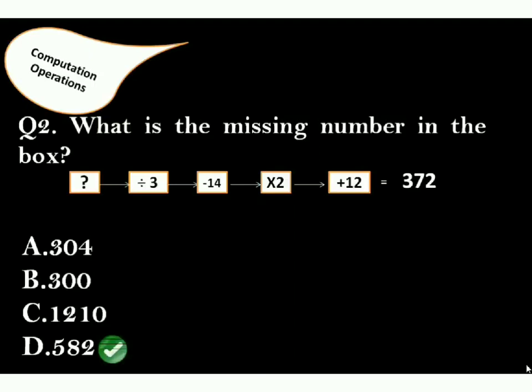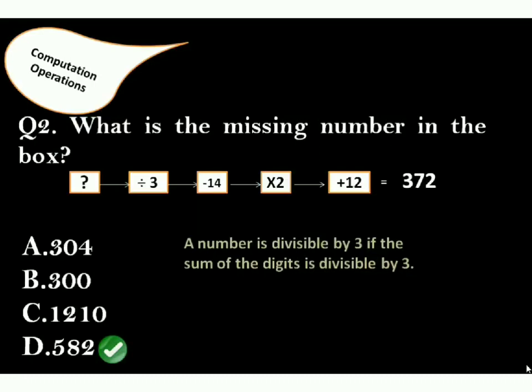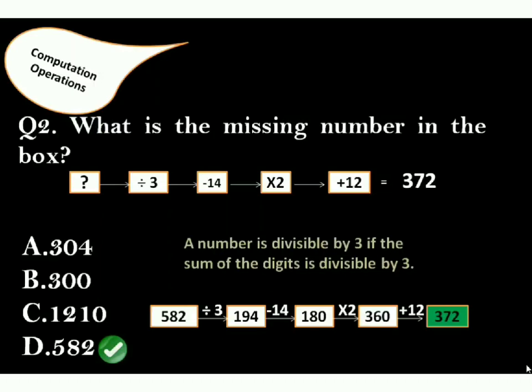The answer is option D. To solve this, first step is divide by 3. As per the rule, you can divide the number by 3 only if its digit sum is divisible by 3. Hence, options A and C are wrong. So we have to try with B and D. After calculation, 582 divided by 3 equals 194, minus 14 is 180, multiply by 2 is 360, and plus 12 is 372.